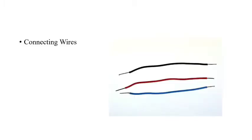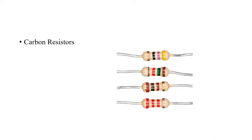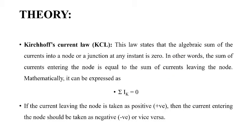For that we will be requiring certain apparatus, like last time. The first thing required is your breadboard. Secondly, we will be requiring certain connecting wires. Then we will be requiring a multimeter, which we'll be using as an ammeter. Next, we require a bunch of carbon resistors — we will be requiring four resistors of different values, or they can be of the same value as well.